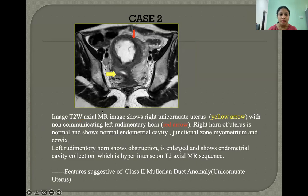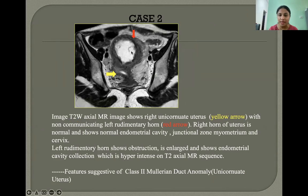Case 2: The T2 weighted axial image shows a right unicornuate uterus with a non-communicating left rudimentary horn. The right horn shows a normal endometrial cavity, junctional zone, and cervix. The left rudimentary horn shows obstruction — it is enlarged and shows endometrial cavity collection, which is hyperintense on T2 axial MR sequence. These features are suggestive of class 2 Mullerian duct anomaly, unicornuate uterus.